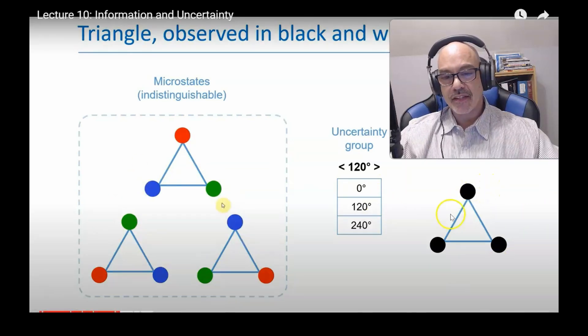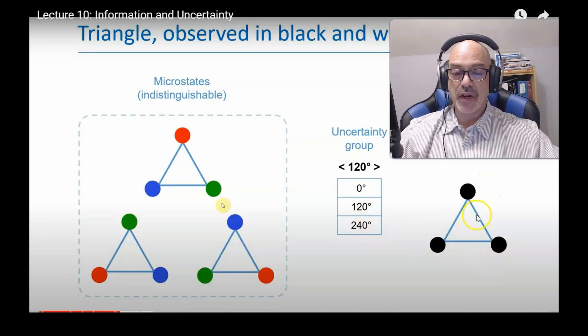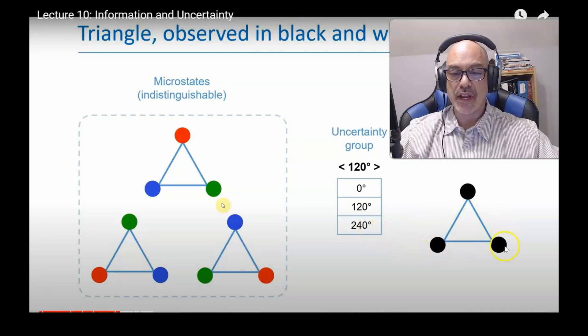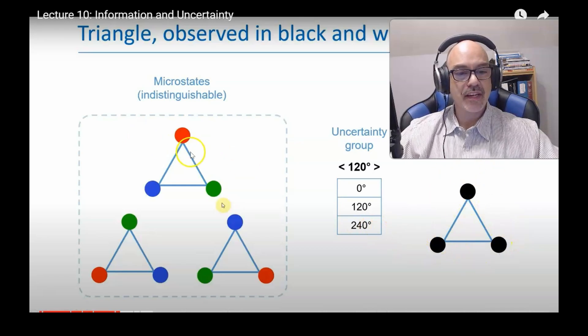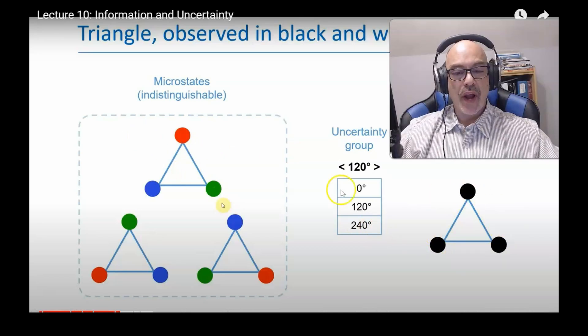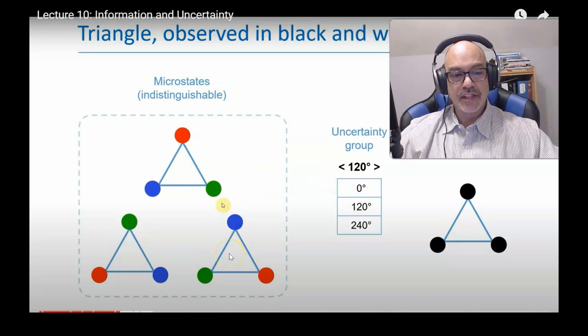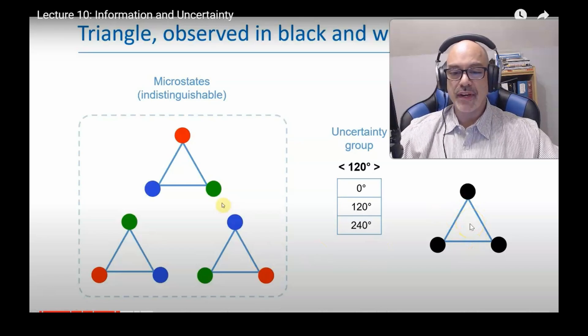If I were to take this triangle and rotate it by 120 degrees, it would look exactly the same. And if I were to rotate it by 240, I couldn't tell the difference. In this case, I can tell the difference. When I operate one of these group elements, I can tell that it's moved from one state to another. Here, they're indistinguishable. There's no way to tell the difference.